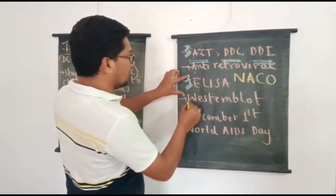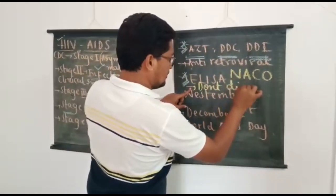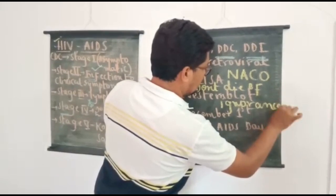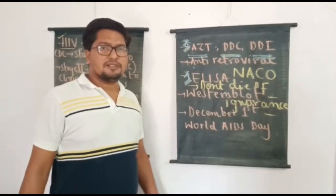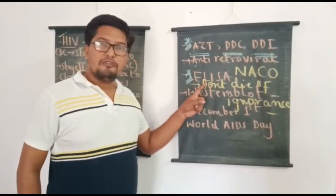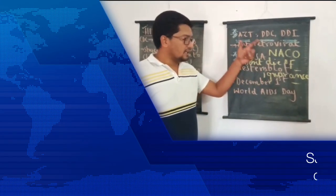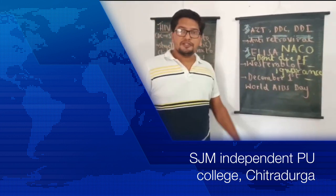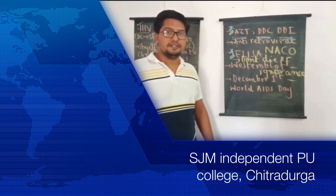Governments are promoting sexual education at higher school levels for this reason. Students should remember the phrase 'Don't die of ignorance,' which is associated with HIV AIDS in the textbook — most people are falling prey and losing their lives simply because of ignorance. In this video, we have covered what exactly HIV AIDS is, its harmful effects, and how HIV progresses into the final stage of infection called AIDS.